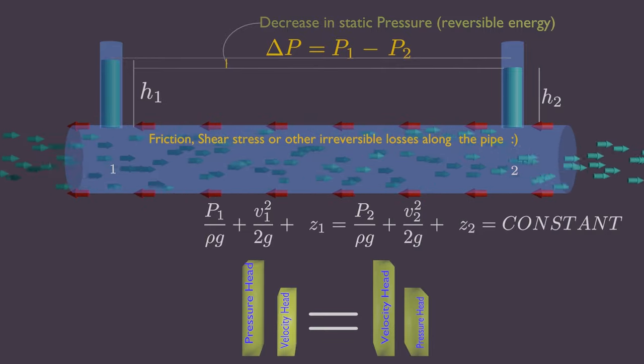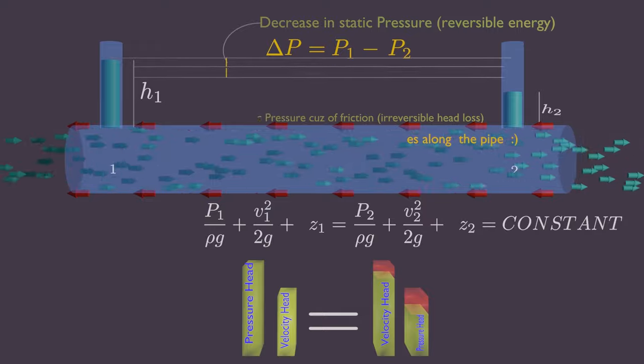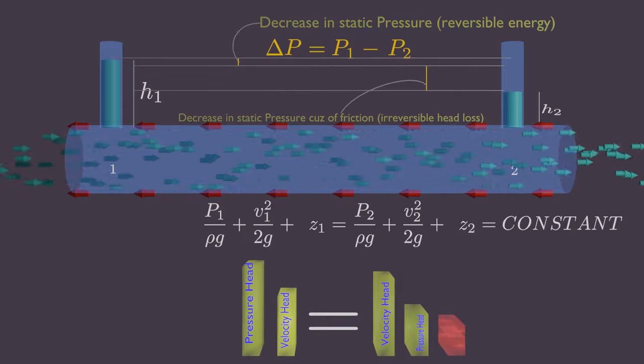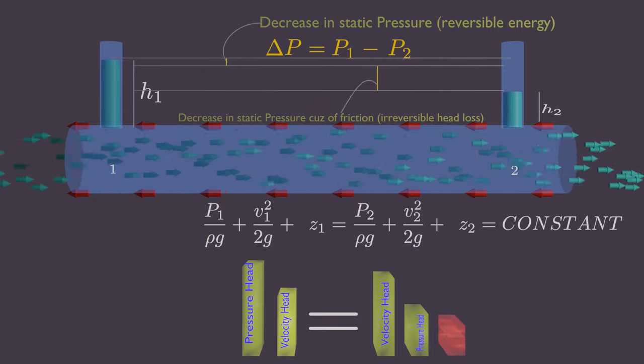So the static pressure will decrease even more along the length of pipe, not only because of increased velocity, but due to friction effect too.